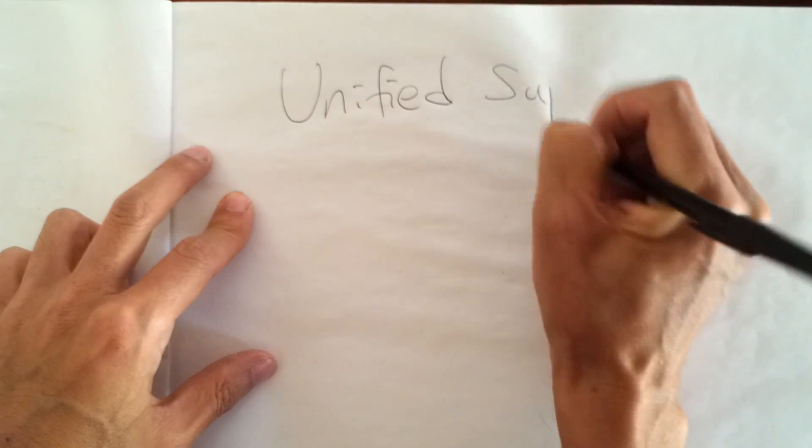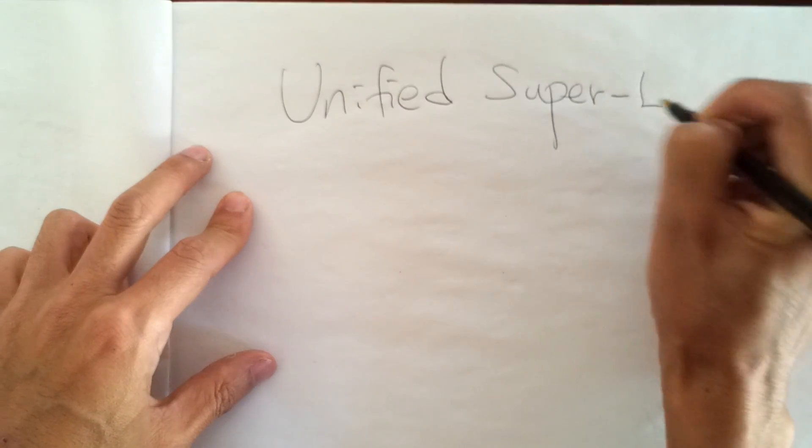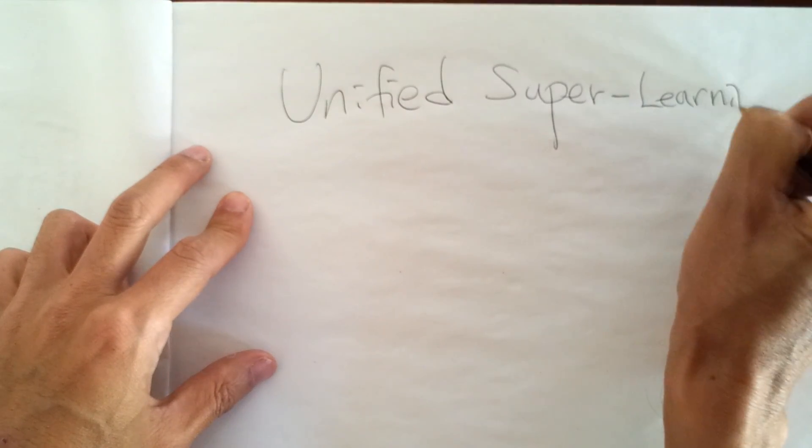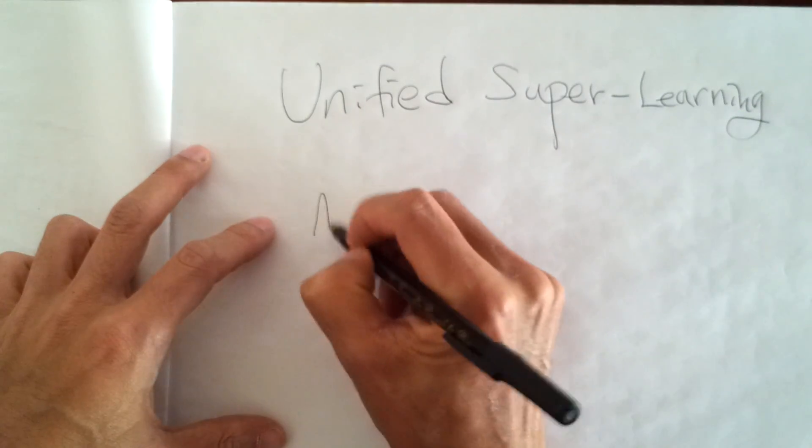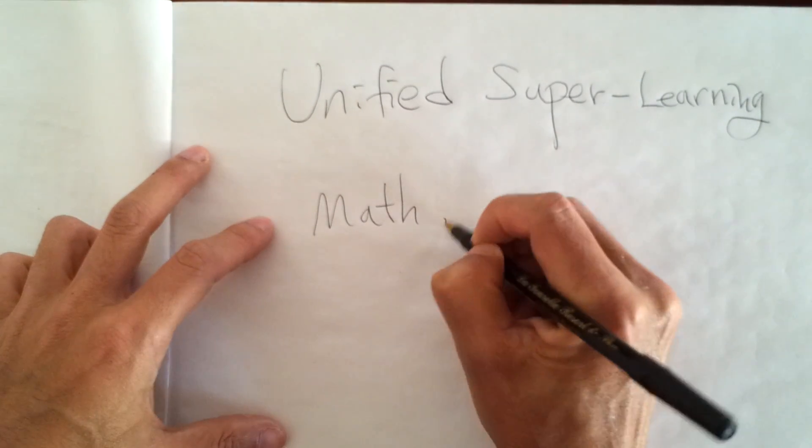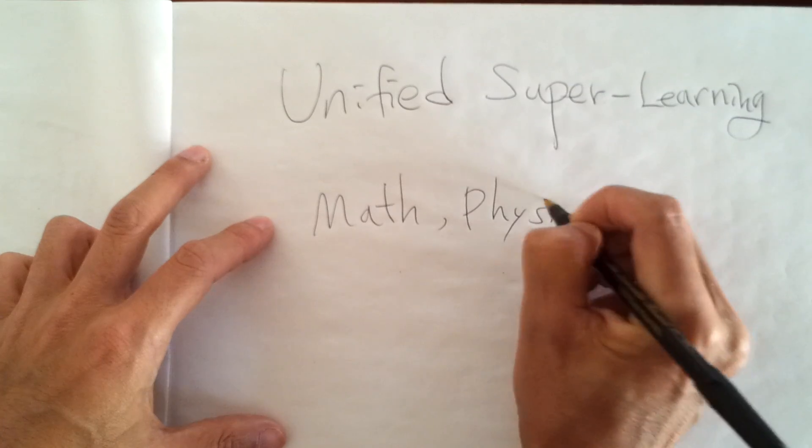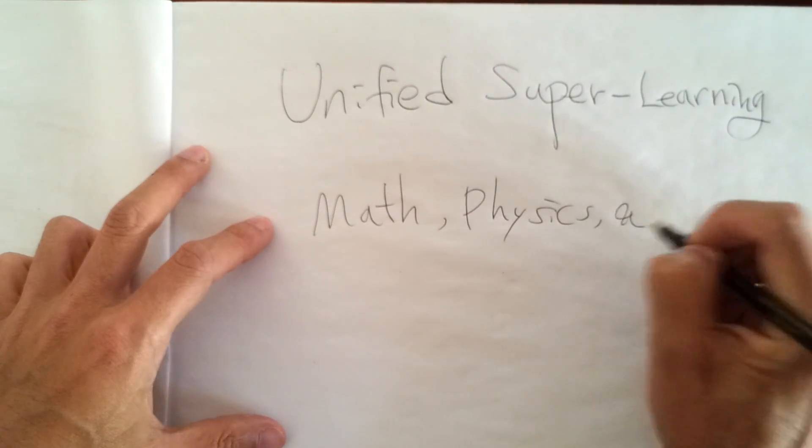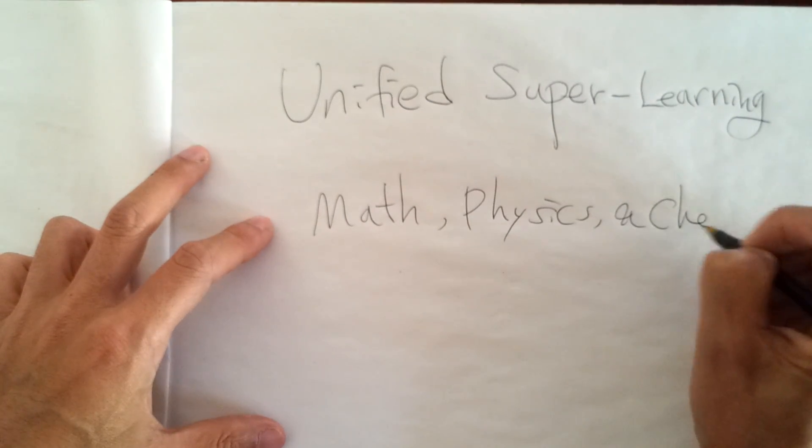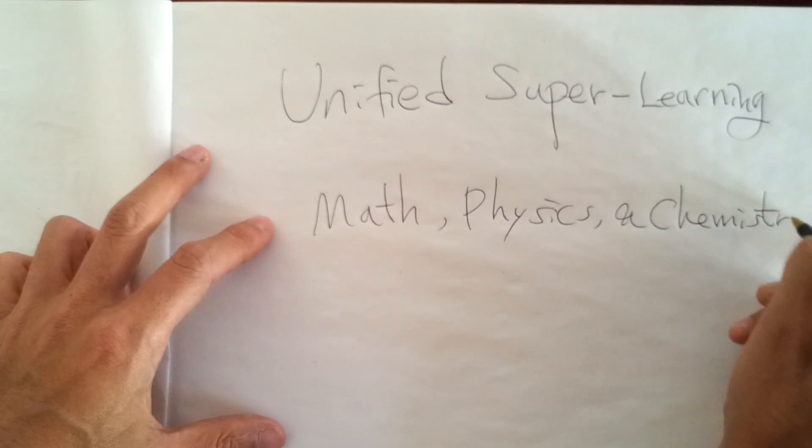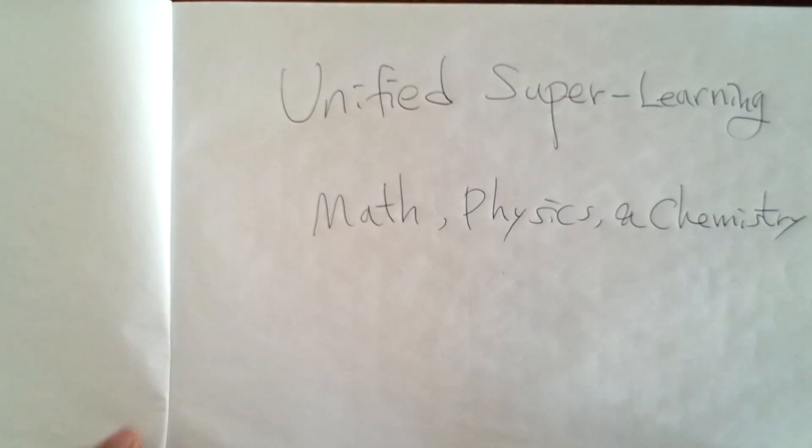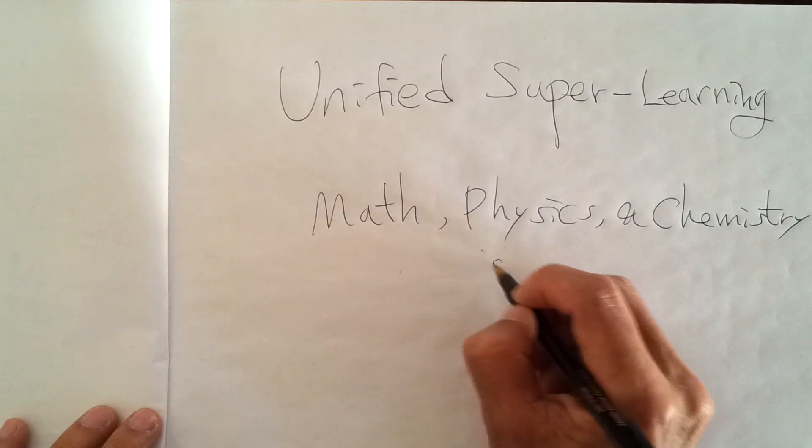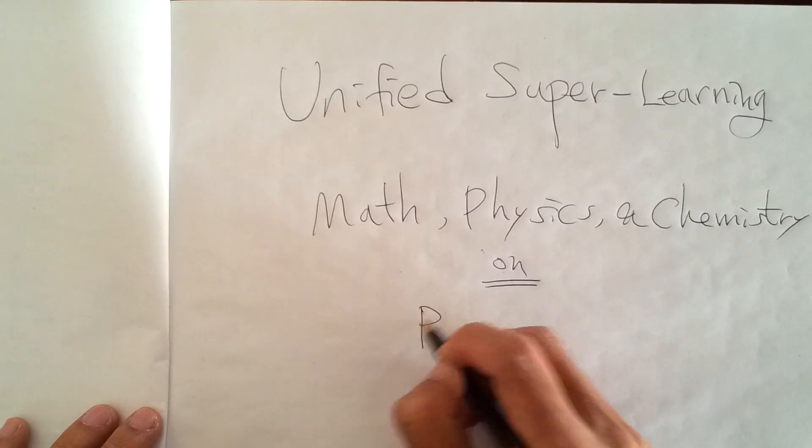Unified Superlearning is a design for the unification of math, physics, and chemistry - the three fundamental buildings of science based on philosophy.